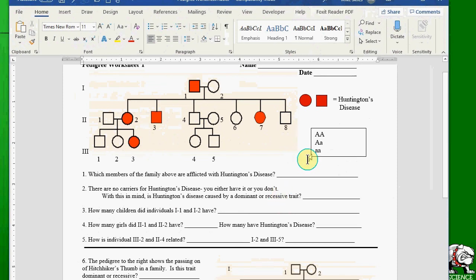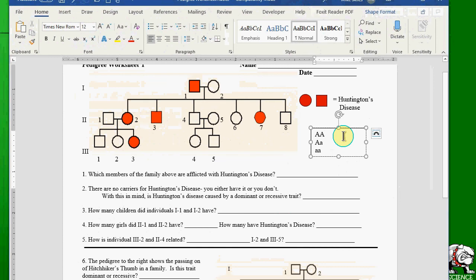To prepare you for number two here, I made a little chart here. We've got three different genotypes that this trait could have. Huntington's disease, I've called letter A, and the dominant, of course, is capital, recessive is lowercase. So think about this.